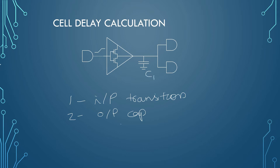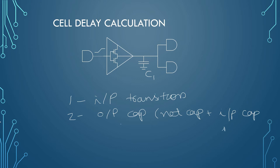Output capacitance of this cell affects the cell delay calculation. Output capacitance is nothing but your wire capacitance — in VLSI it is called net capacitance — plus all input pin capacitances attached to that net. So input pin capacitance plus net capacitance gives you the output capacitance of that particular cell.